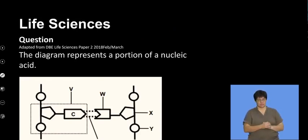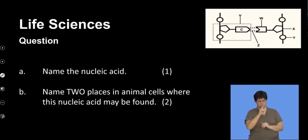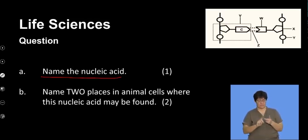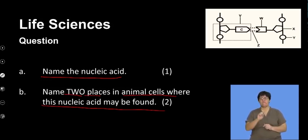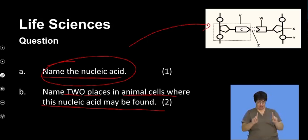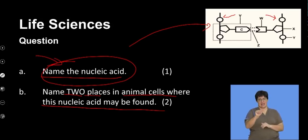The next diagram represents a portion of a nucleic acid. The first question asks us to name the nucleic acid for one mark. Looking at the image closely, we can see it is double-stranded. The double-stranded nature is a distinguishing characteristic of DNA, and hence I use that as the significant point to identify that DNA is the nucleic acid illustrated.